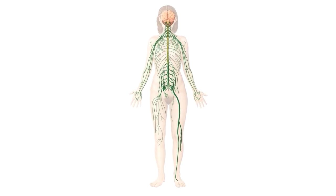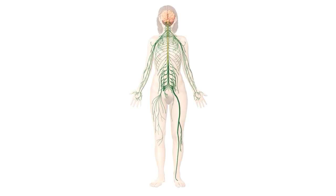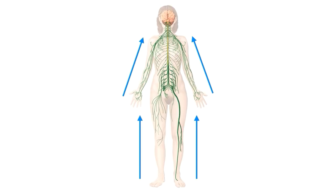Nerves carry information from the spinal cord to the body and vice versa. The nerves that transmit information from the spinal cord to the body are called motor nerves, and you can see the direction of flow indicated by the blue arrows. Nerves transmitting information from the body to the spinal cord are called sensory nerves. Although usually one type of fiber dominates, most nerves contain both types of fibers.